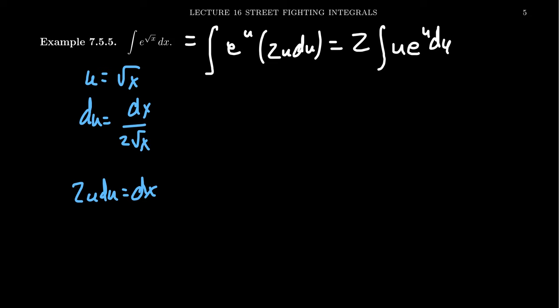For which, if we're doing integration by parts, we'll set u equal to u. That's pretty convenient. And then dv will equal e to the u du. And that way, du equals du. That was also convenient. And then v equals e to the u.